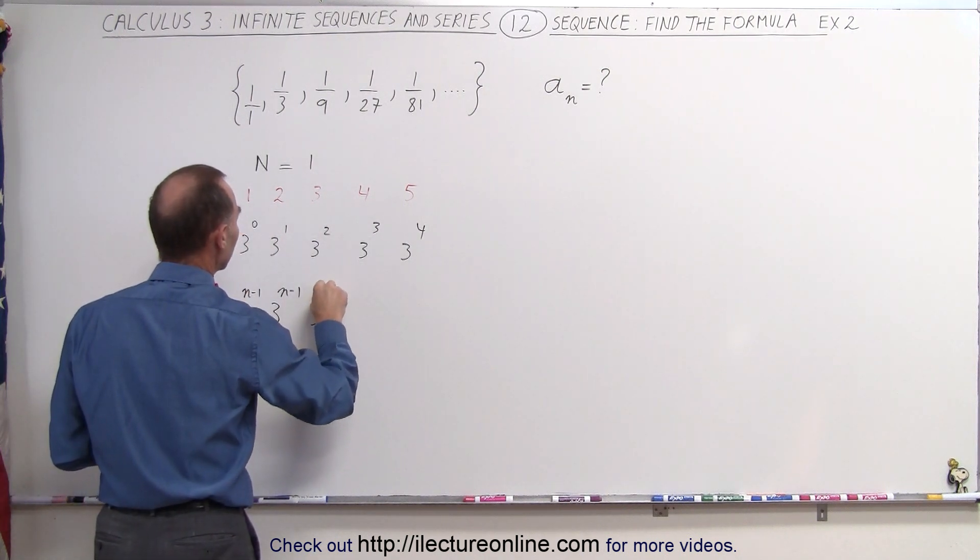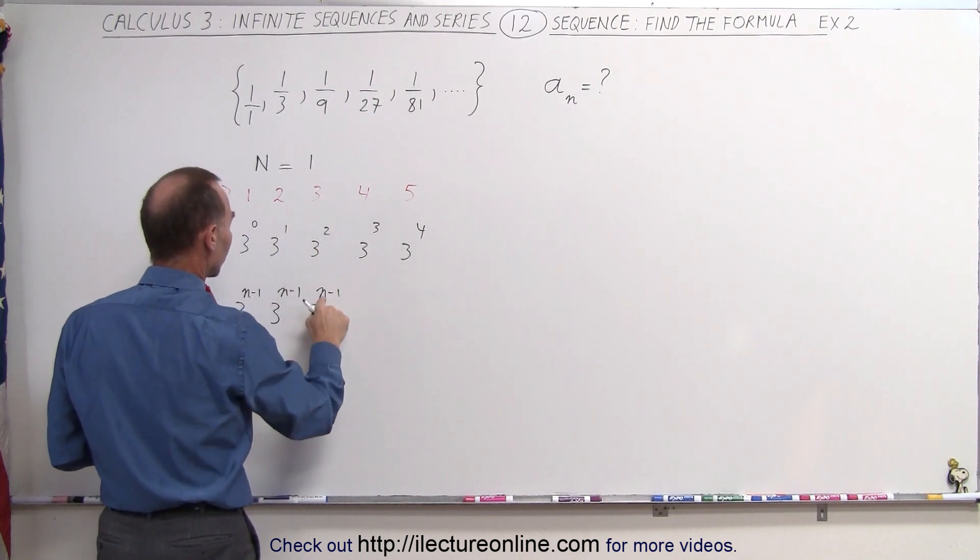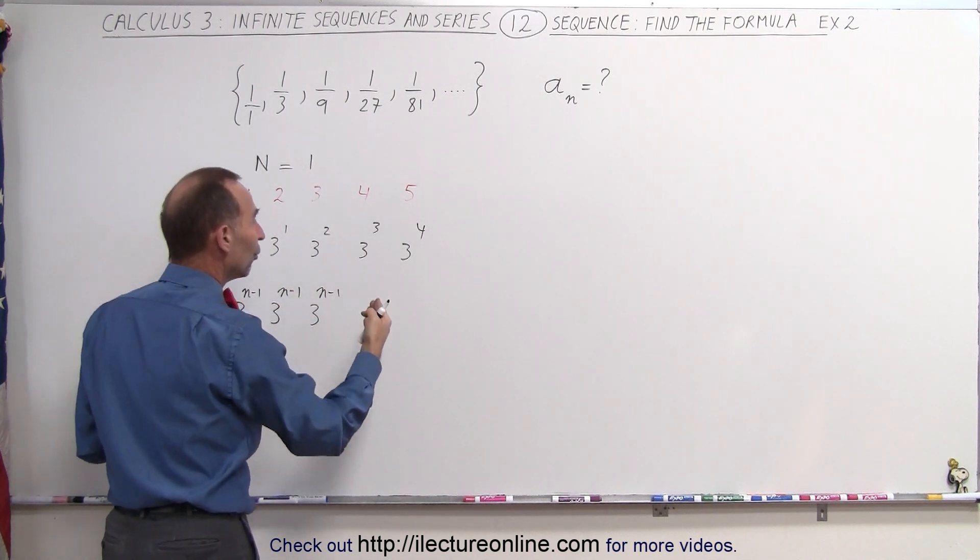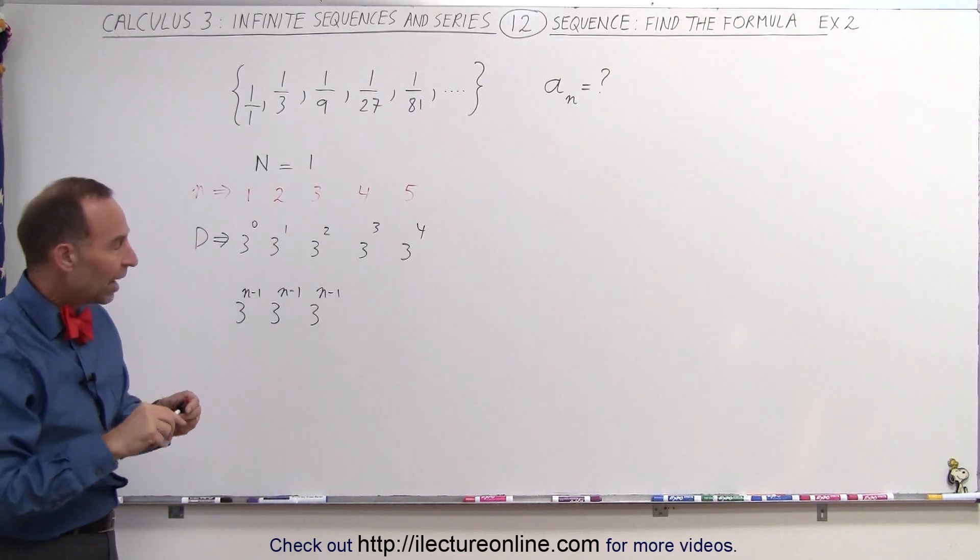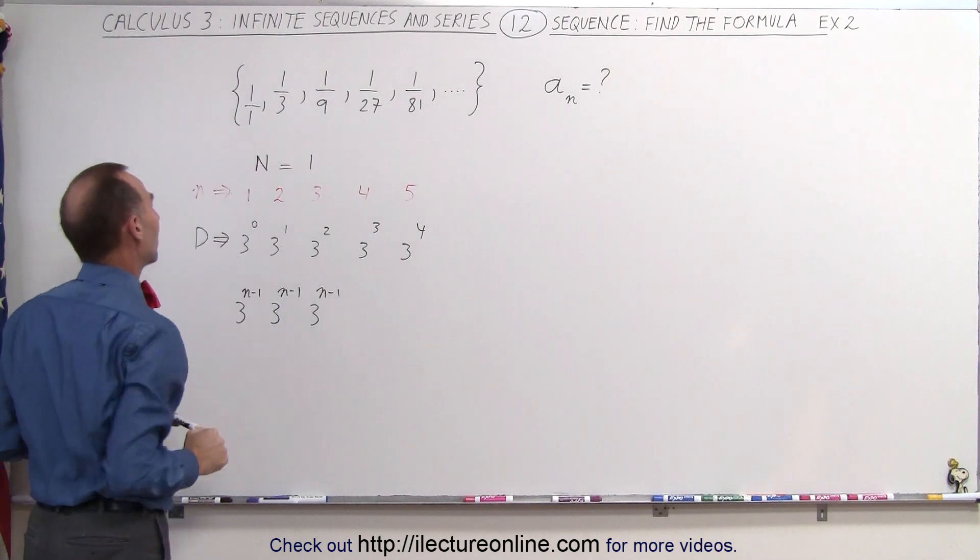Here, this is 3 to the n minus 1. Because n is 3 here. So 3 minus 1 is 2. And so forth. So you can see that every denominator can be expressed in terms of 3 to the n minus 1 power, starting with the first denominator.